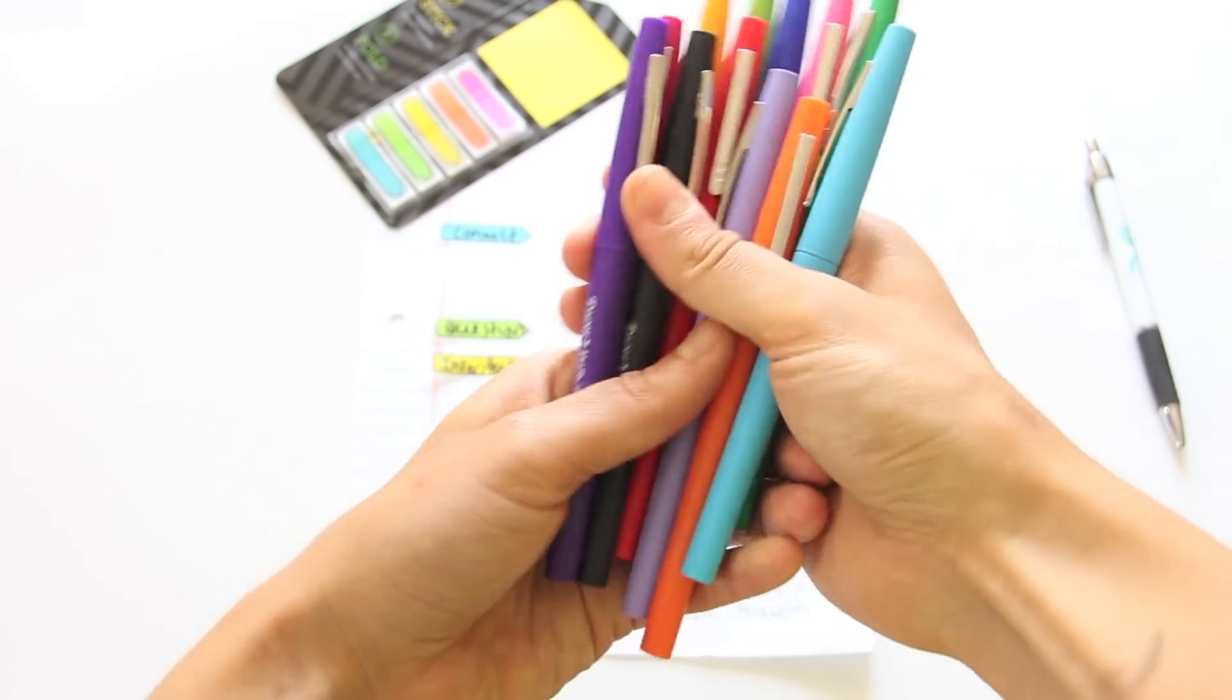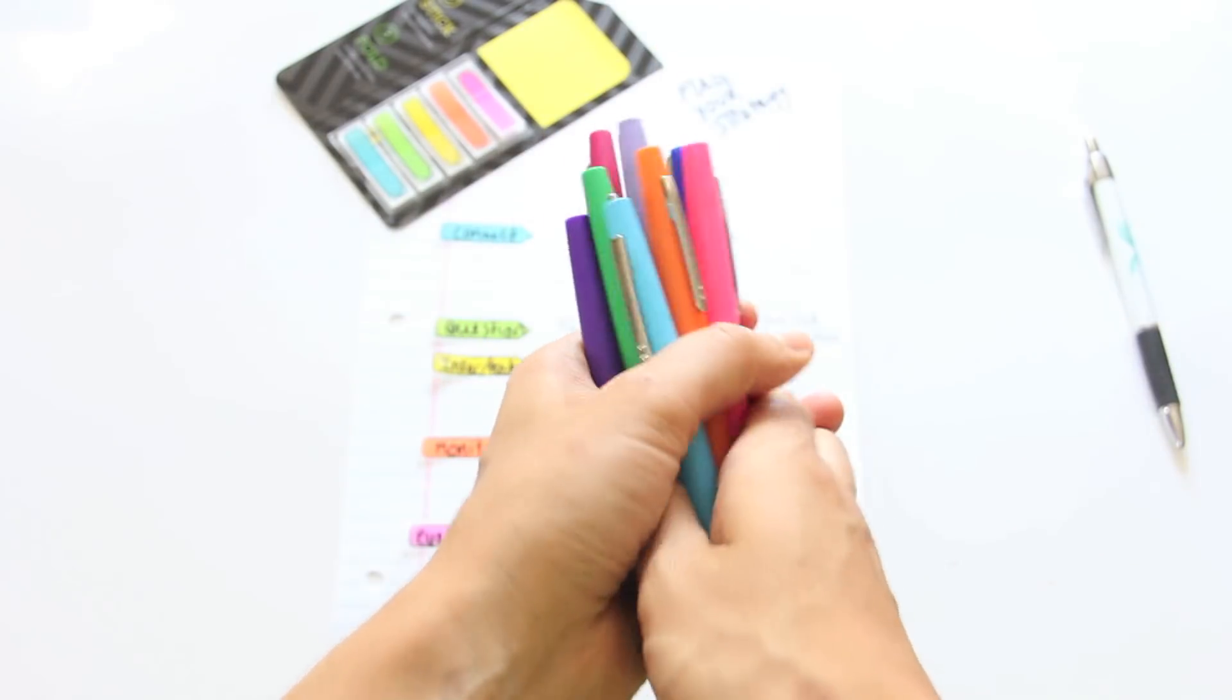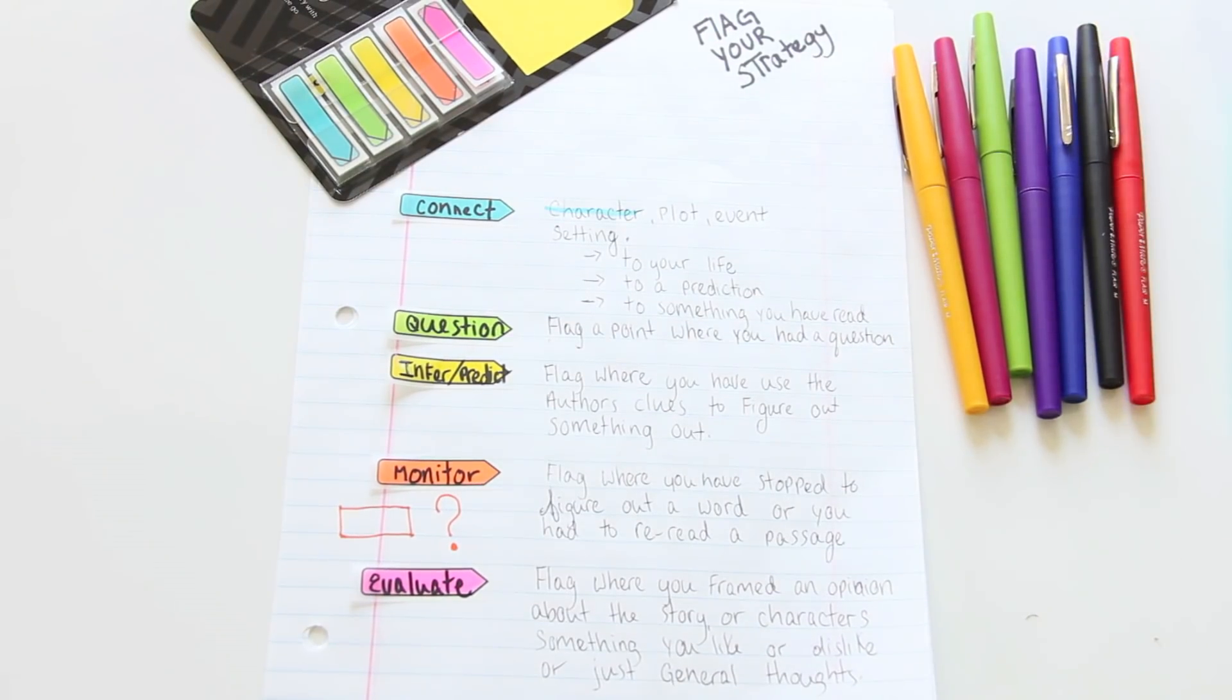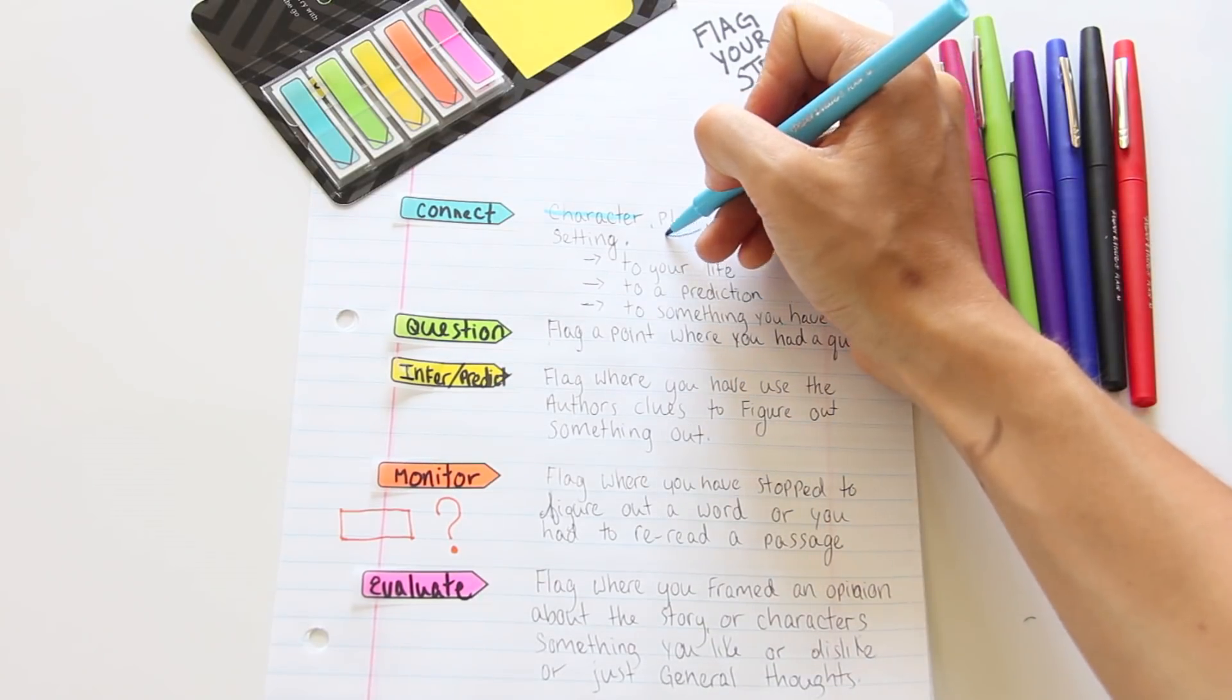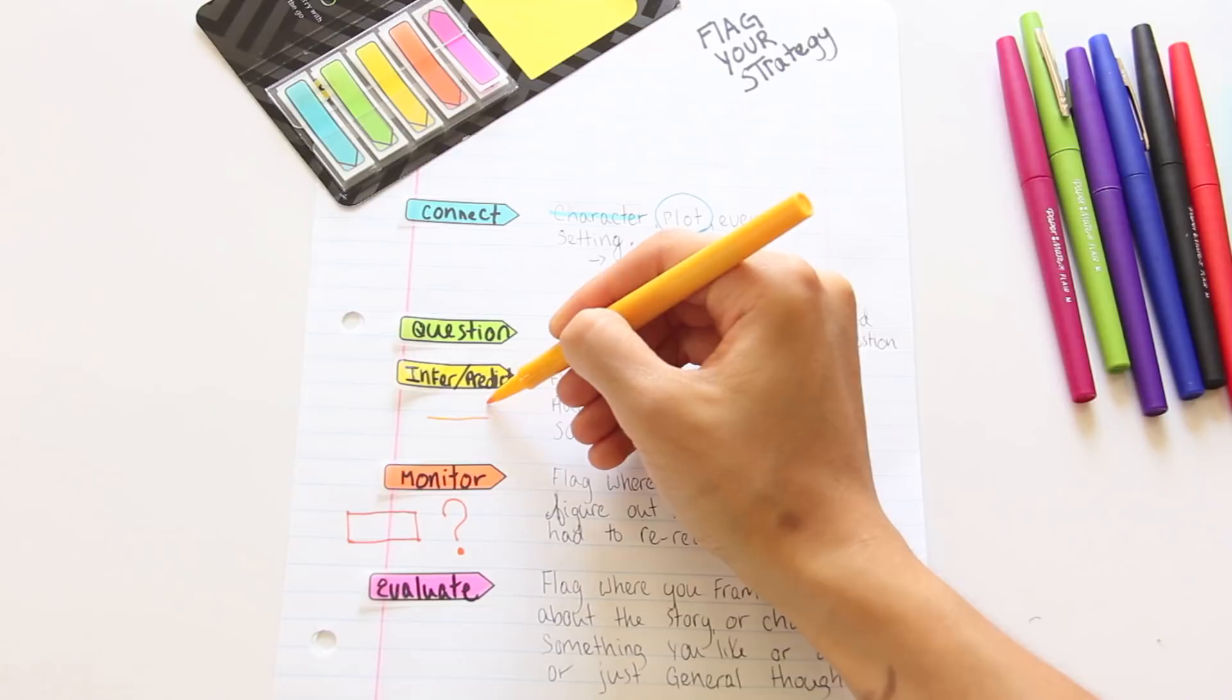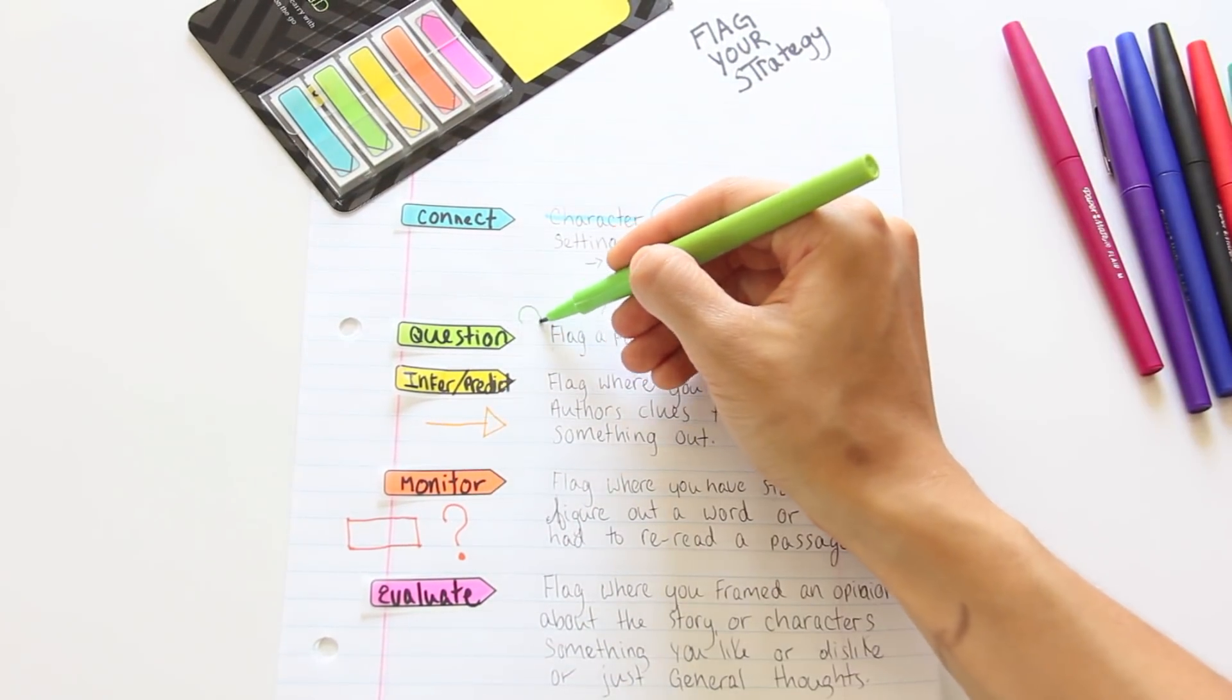These paper mate flare pens are perfect for making indicators in your notes and in your textbooks, or your literature books. So I'm going to do the same indicators that I did before, like circling important people, places, or making arrows to things that need to be defined, or maybe I have a question.